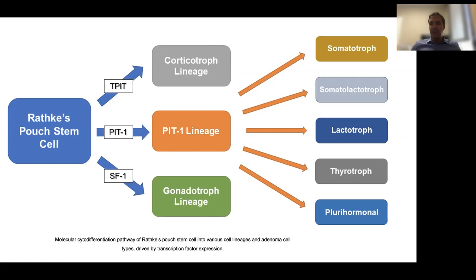There is a more updated classification of pituitary tumors recently proposed by the WHO, based on cell lineages for each adenoma type, driven by transcription factor expression. From the Rathke's pouch stem cell, there are three different transcription factors — Tpit, Pit1, and SF1 — each giving rise to different cell lineages.